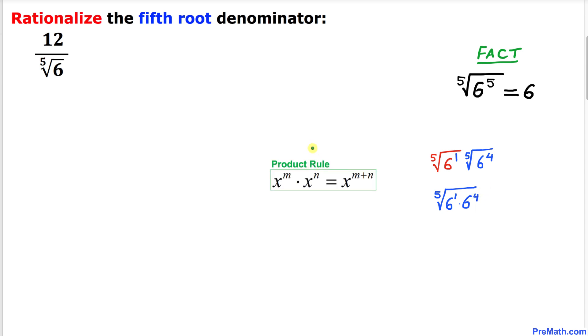Now let's apply the product rule of exponents. Inside this radical part, these radicands 6 to the power 1 and 6 to the power 4 will become simply 6 to the power 5.